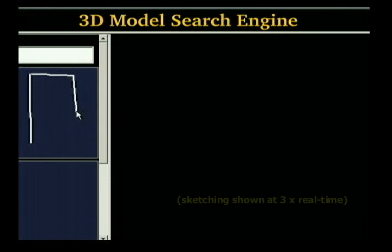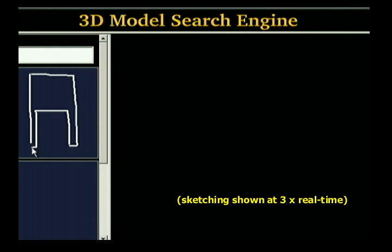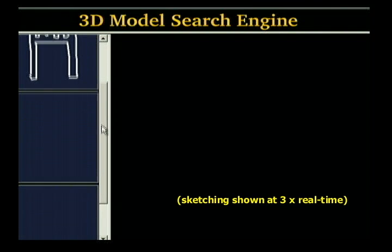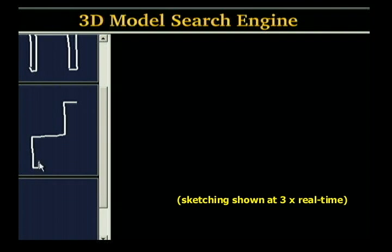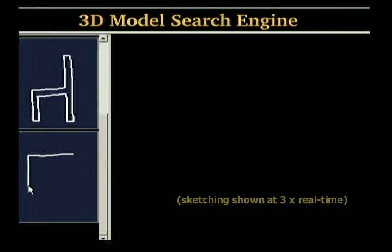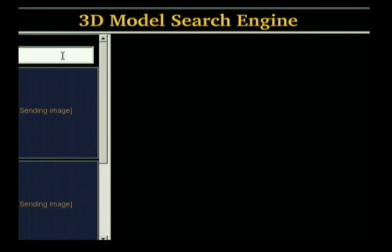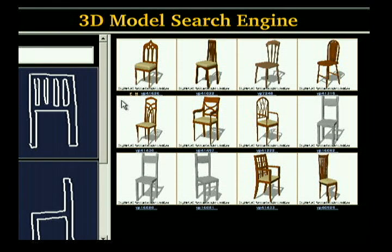For more focused searches, we allow the user to draw 2D sketches from more than one viewpoint. For instance, front, side, and top views are very effective at describing a particular chair. In this case, the database contains over 200 chairs, and text keywords would not be as specific.